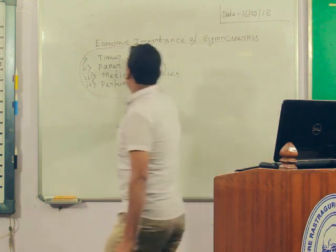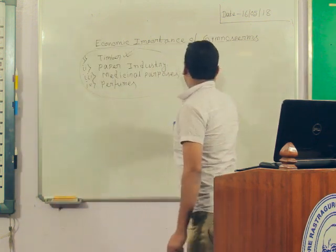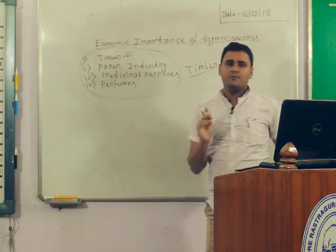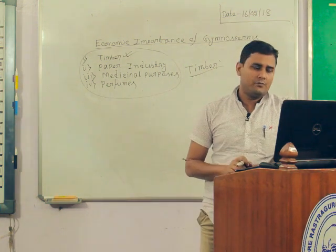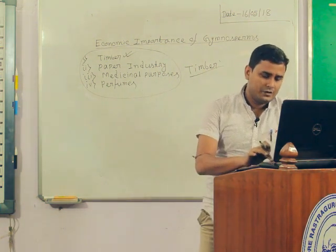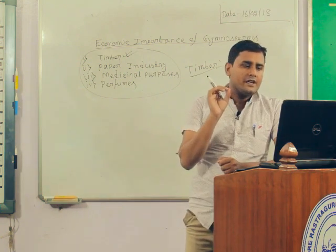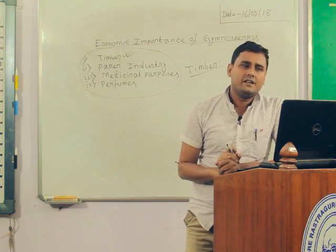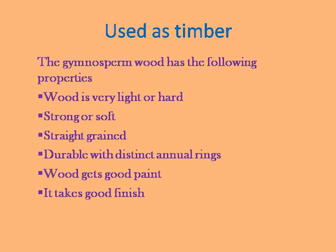First of all, we can use timber. Various species of gymnosperms are a good source of wood. Why do we use gymnosperms as timber? Because gymnosperm wood has some good characteristic properties. First of all, the wood is very light or hard. They are strong or soft. They are straight-grained. They are durable. And the wood takes good paint and a good finish as well.